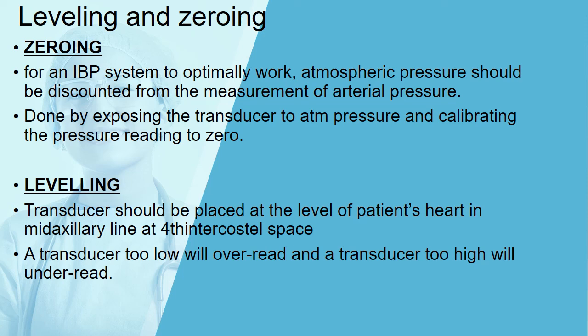Zeroing: for an invasive blood pressure system to work optimally, atmospheric pressure must be discounted from the measurement. This is done by exposing the transducer to atmospheric pressure and calibrating the pressure reading to zero on the monitor. Leveling: the transducer should be placed at the level of the patient's heart — at the mid-axillary line at the fourth intercostal space — in any position whether supine, prone, or head-up. A transducer placed too low will over-read, and one placed too high will under-read the blood pressure.